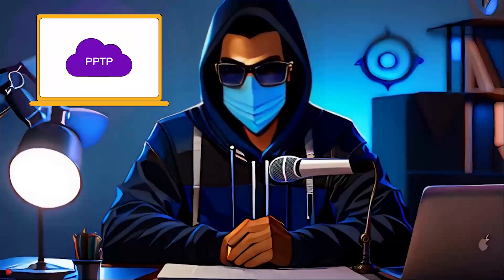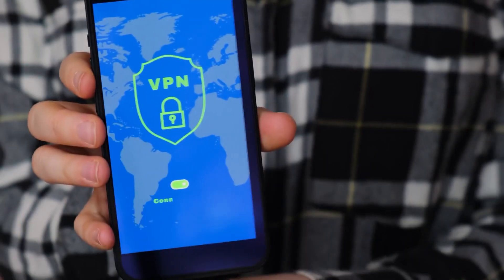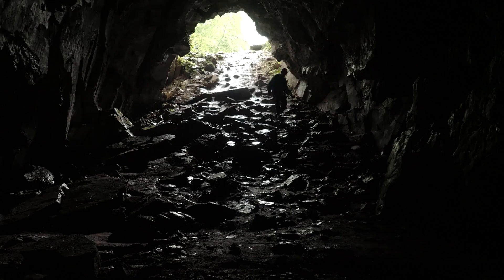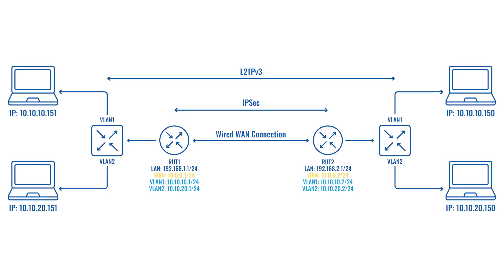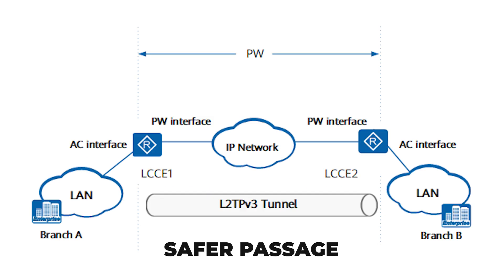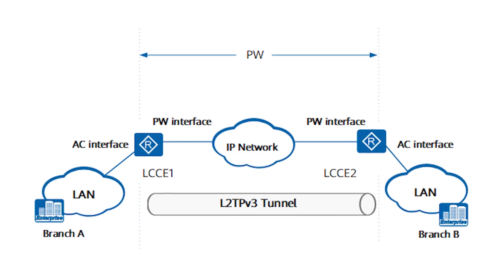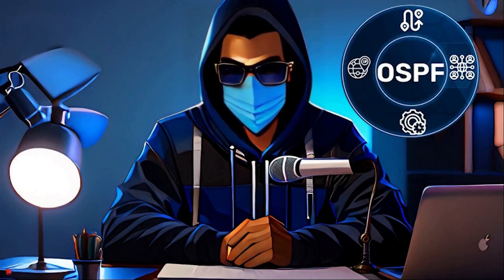Next on the list is PPTP and L2TPv3. The early pioneers of VPN protocols are like an old tunnel through a mountain — fast but riddled with security holes. L2TPv3, often paired with IPsec, is the upgraded tunnel with reinforced walls, providing a safer passage for your data. But even the best tunnels need maintenance to stay secure.